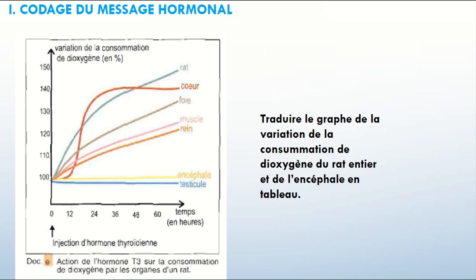Ce qui est demandé en premier lieu, c'est de traduire le graphe de la variation de la consommation de dioxygène du rat entier et de l'encéphale en un tableau. Je vais utiliser uniquement l'encéphale et le rat entier. Dans un tableau, on met toujours ce qui est sur l'axe X sur la première ligne et ce qui est sur l'axe Y sur la deuxième ligne. Mais là, j'ai aussi les valeurs et les organes à placer — alors comment faire tout cela ?